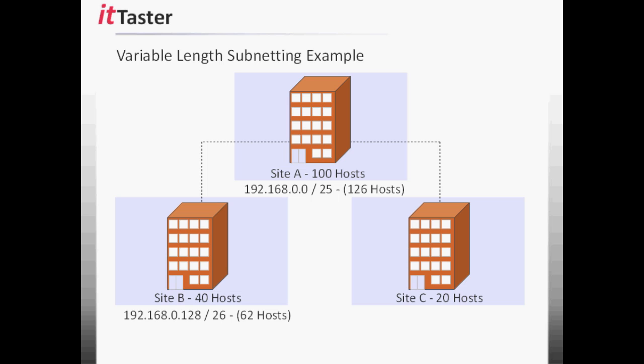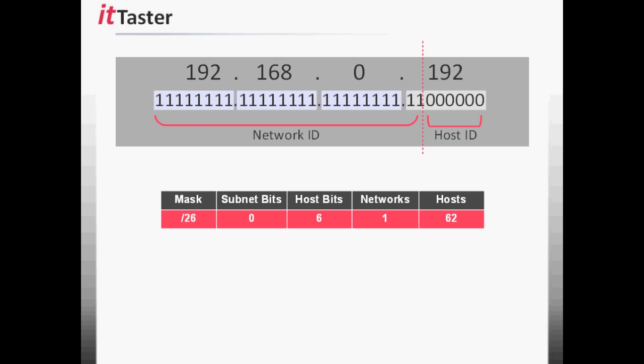The second subnet 192.168.0.192/26 is put to one side for the next step. Finally, we're left with Site C, which requires 20 hosts. So we take the subnet 192.168.0.192/26 that we set aside previously. We know that 192.168.0.192/26 gives us 62 valid hosts to work with after allowing for the network address and broadcast address. If we subnet 192.168.0.192/26 by borrowing one host bit, the subnet mask is adjusted to 27 bits — slash 27.